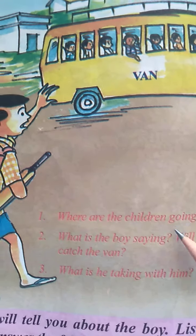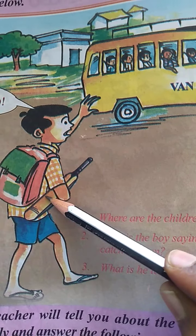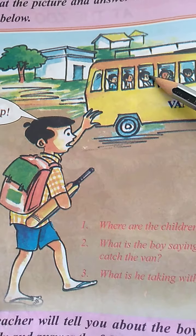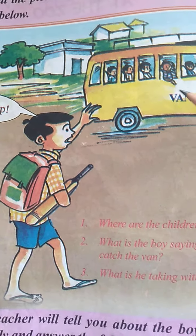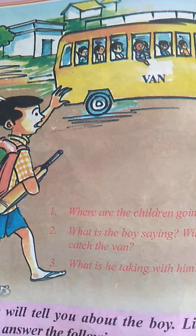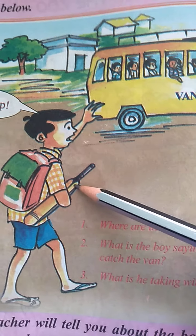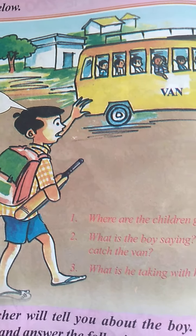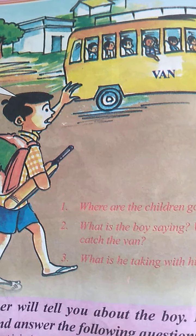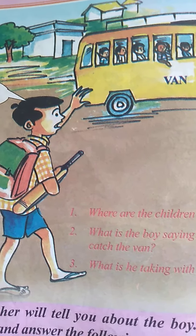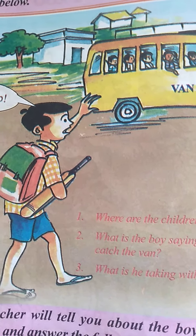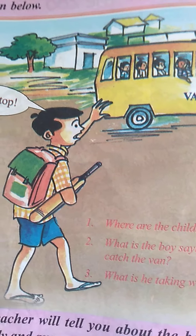On page number two from our previous class, they asked: where are the children going and what is the boy saying? This boy is saying 'Stop! Stop!' — he is showing his hand towards the van, meaning he wants to get into the van. He is taking one bag with him to play there.